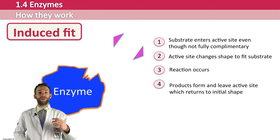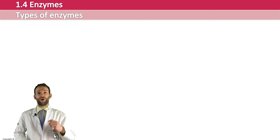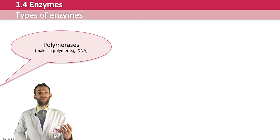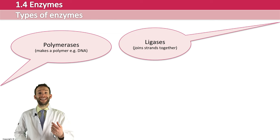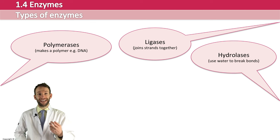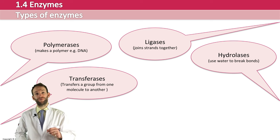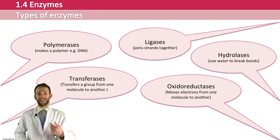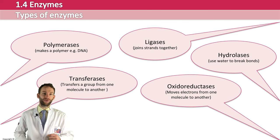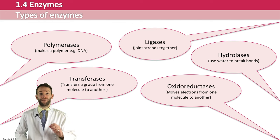You can split enzymes into groups based on the type of reaction they catalyze. Polymerases build large molecules, like DNA. Ligases are like the glue of enzymes — they join small sections together. Hydrolases break down molecules by breaking bonds using water in hydrolysis reactions. Transferases take a group from one molecule and add it to another. Oxidoreductases move electrons from one molecule to another. Don't worry too much about these, as you'll revisit them throughout the course.